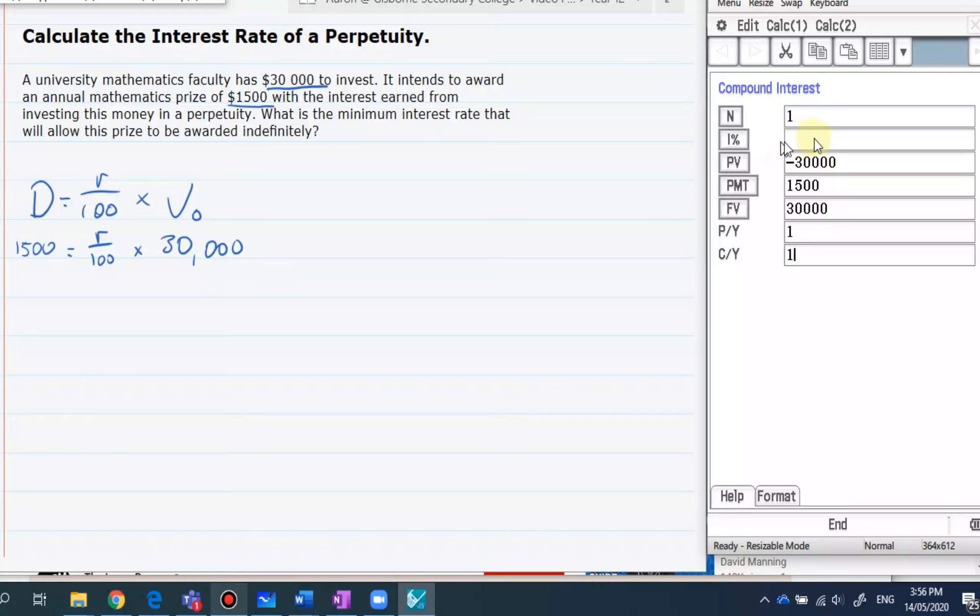Pop up here and hit solve for the interest. And we get an interest rate would have to equal 5%. So if we did this,